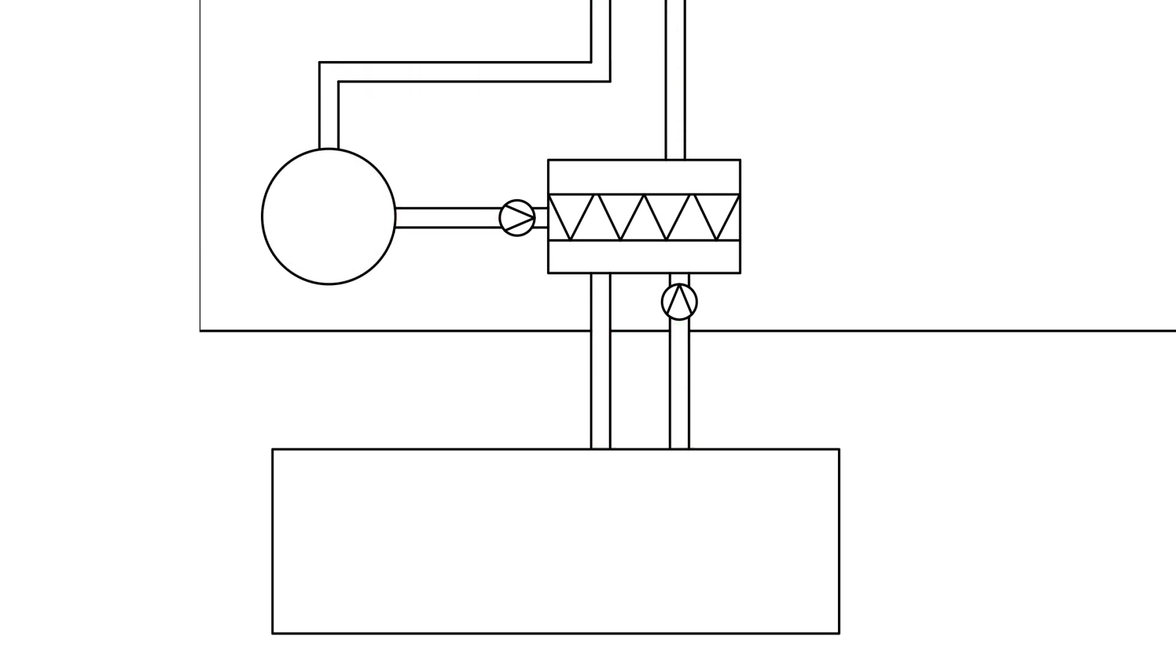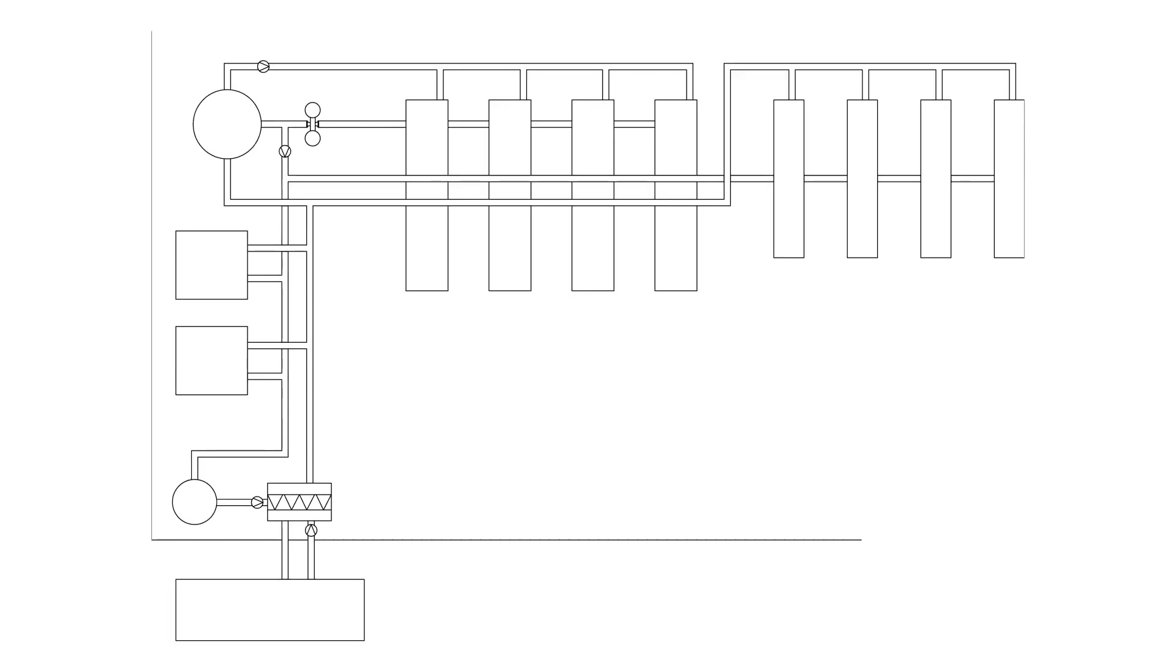The process water is cooled by the heat exchanger, then directed into a main process water manifold which takes the water and delivers it to the entire system.